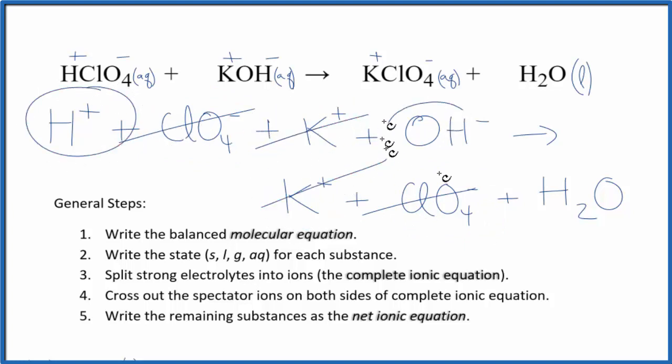And what remains is the net ionic equation for HClO4 plus KOH. I'll clean it up and write the states in, and we'll have our net ionic equation.